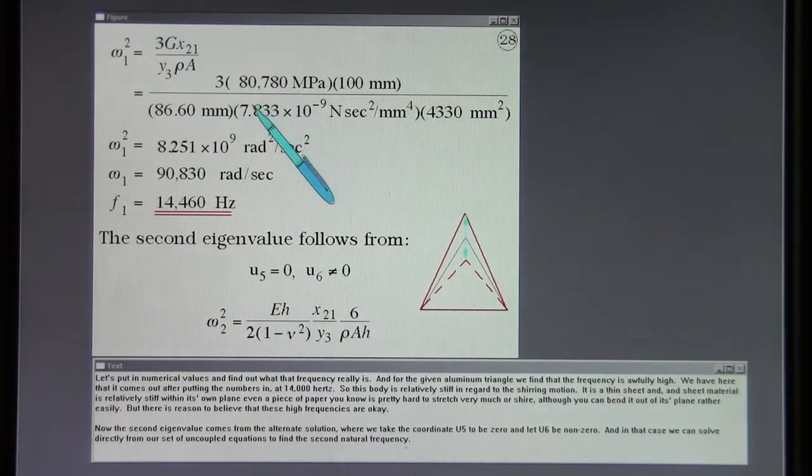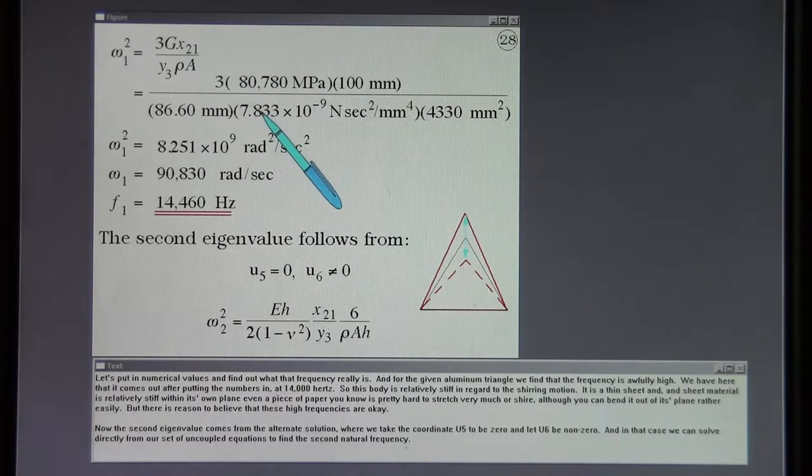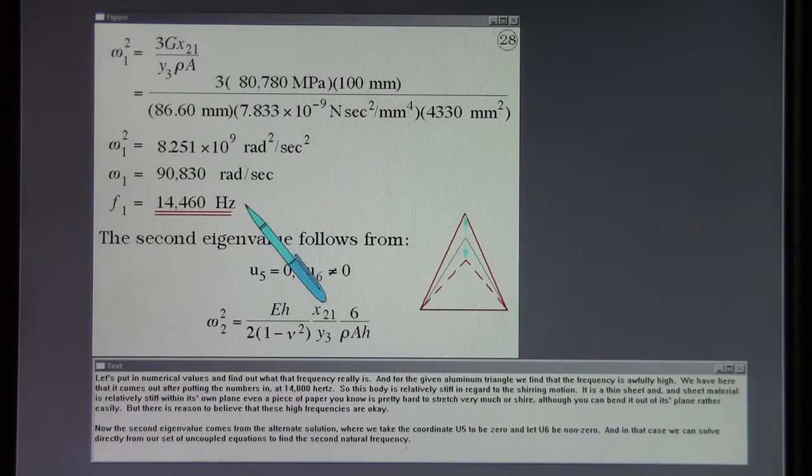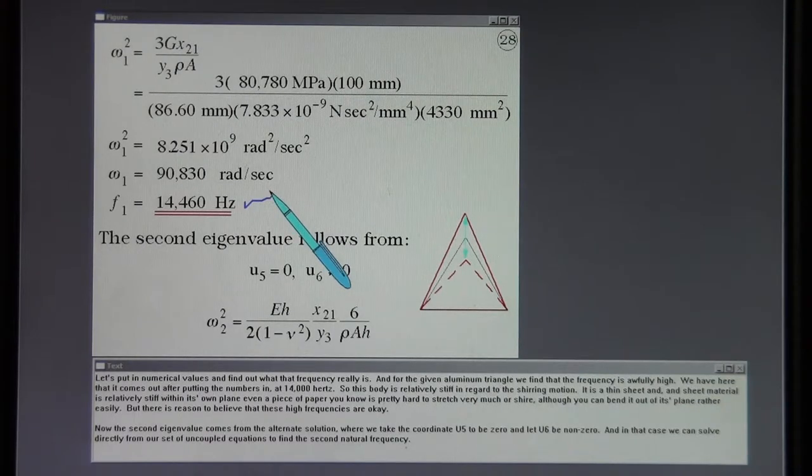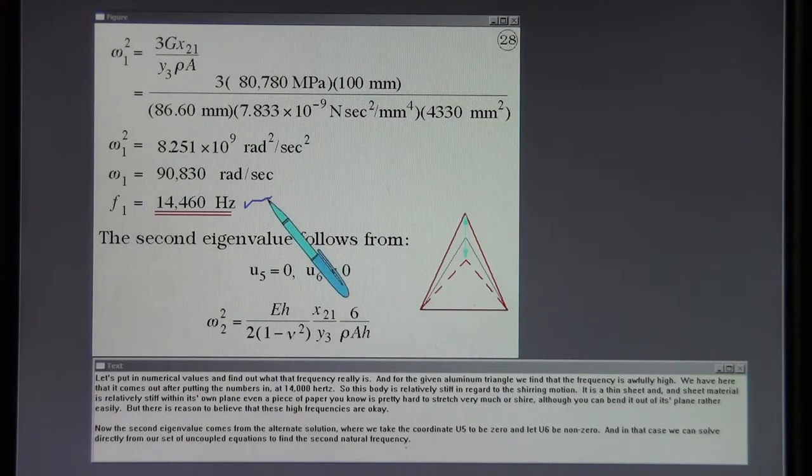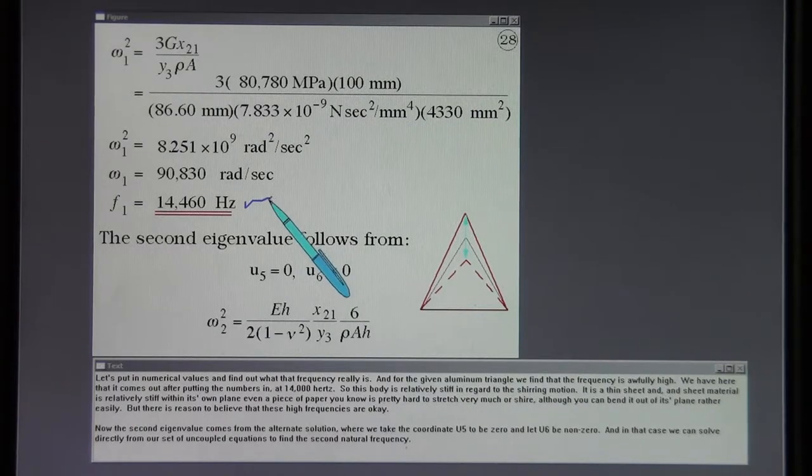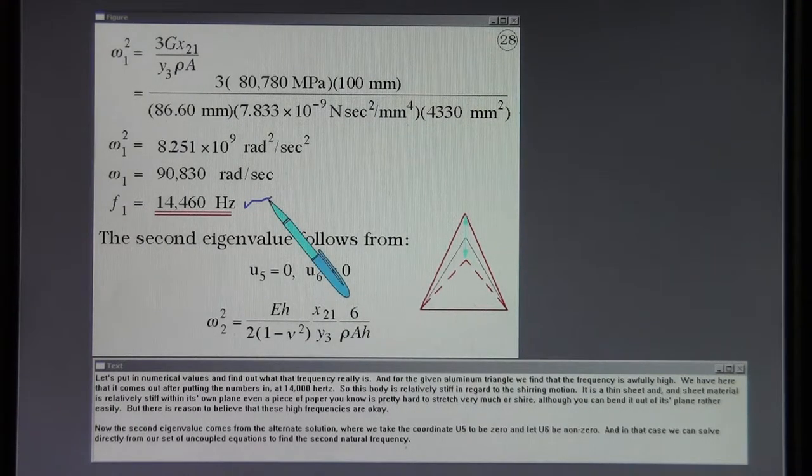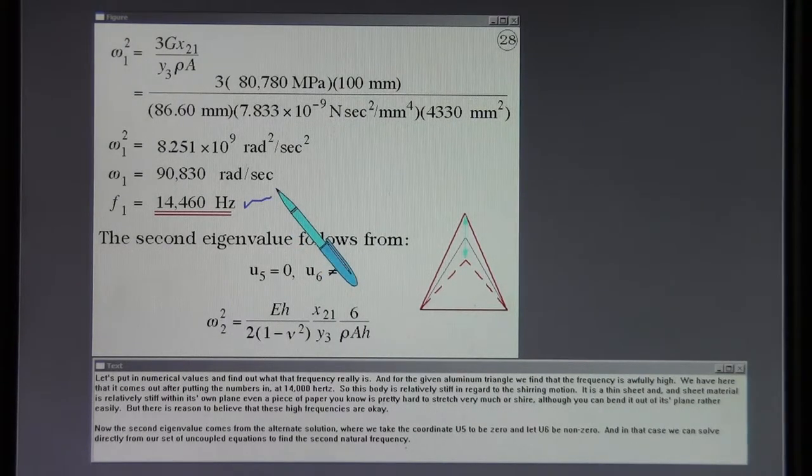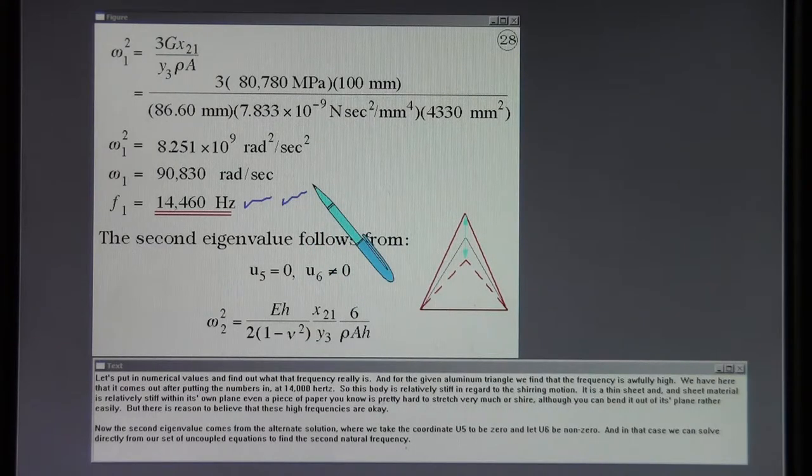Let's put in numerical values and find out what that frequency really is. For the given aluminum triangle, we find that the frequency is awfully high. After putting the numbers in it comes out at 14,000 Hertz. So this body is relatively stiff in regard to the shearing motion. It is a thin sheet and sheet material is relatively stiff within its own plane. Even a piece of paper is pretty hard to stretch very much or shear, although you can bend it out of its plane rather easily. But there is reason to believe that these high frequencies are okay.